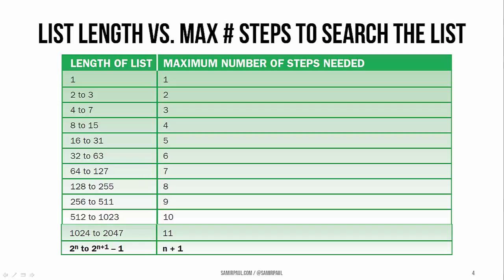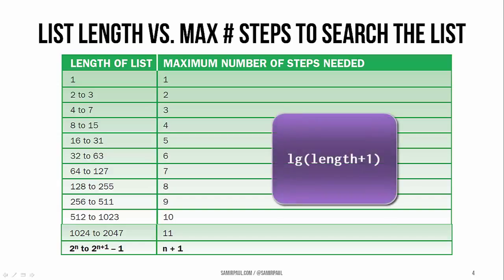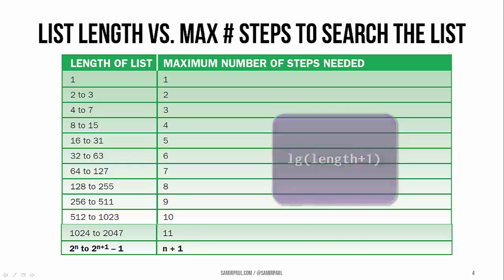Here you can see the relationship between the length of the list and the maximum number of steps it takes to search through that list. To find the number in the second column — the maximum number of steps needed — all you have to do is add one to the larger number in the first column's range and take the log base two. This shows us that any method using a binary search runs on the order of log n.